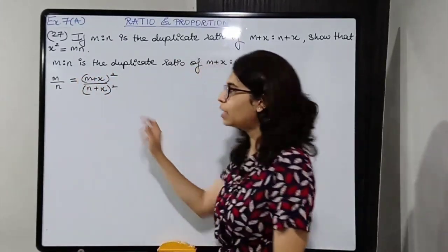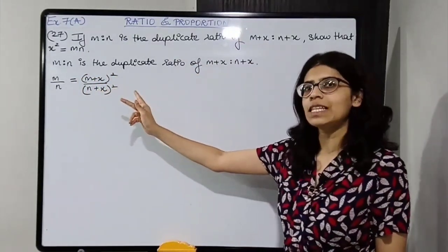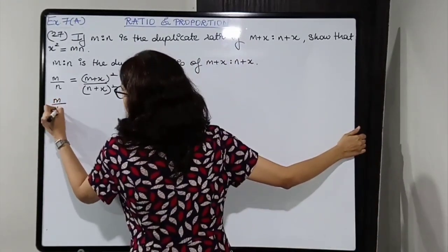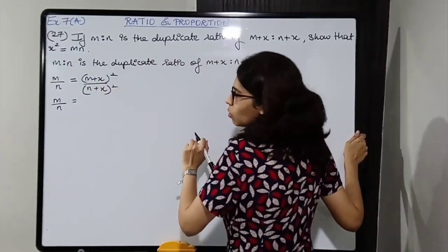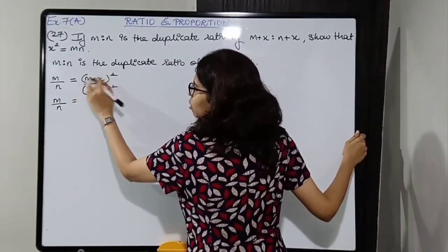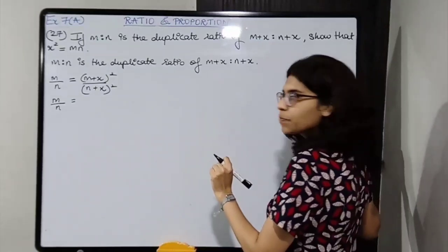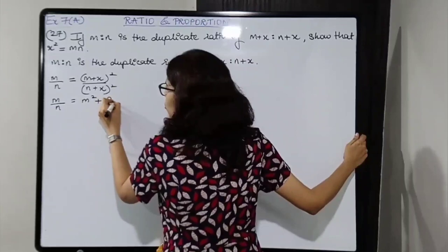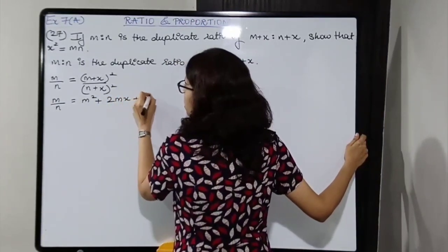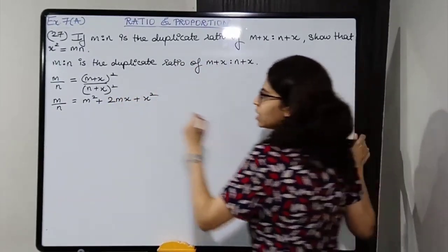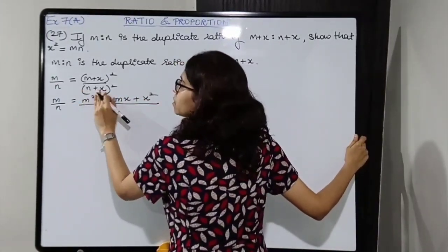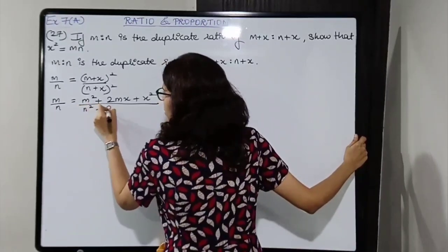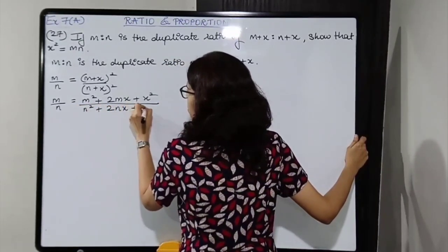Duplicate means squaring — multiplying by the same numerator and same denominator. So m upon n equals squaring this. We will apply the formula (a plus b) whole squared, which is a squared plus 2ab plus b squared, to both numerator and denominator.